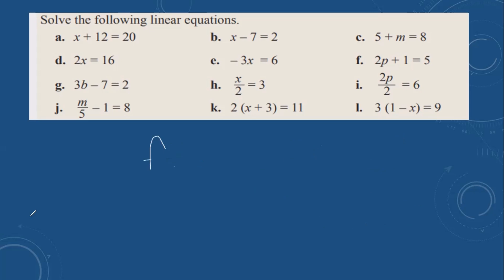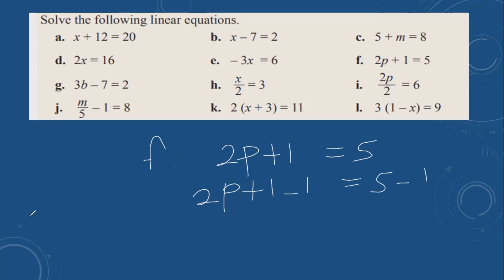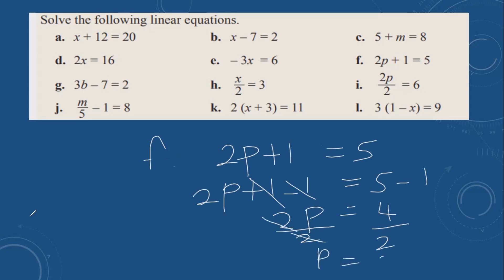Then f: 2b plus 1 equals 5. First you can remove plus 1 by doing the opposite minus 1. So 5 minus 1 gives us 2b equal to 4. Then you can divide both sides by 2. These two cancel out. So b is equal to 2.